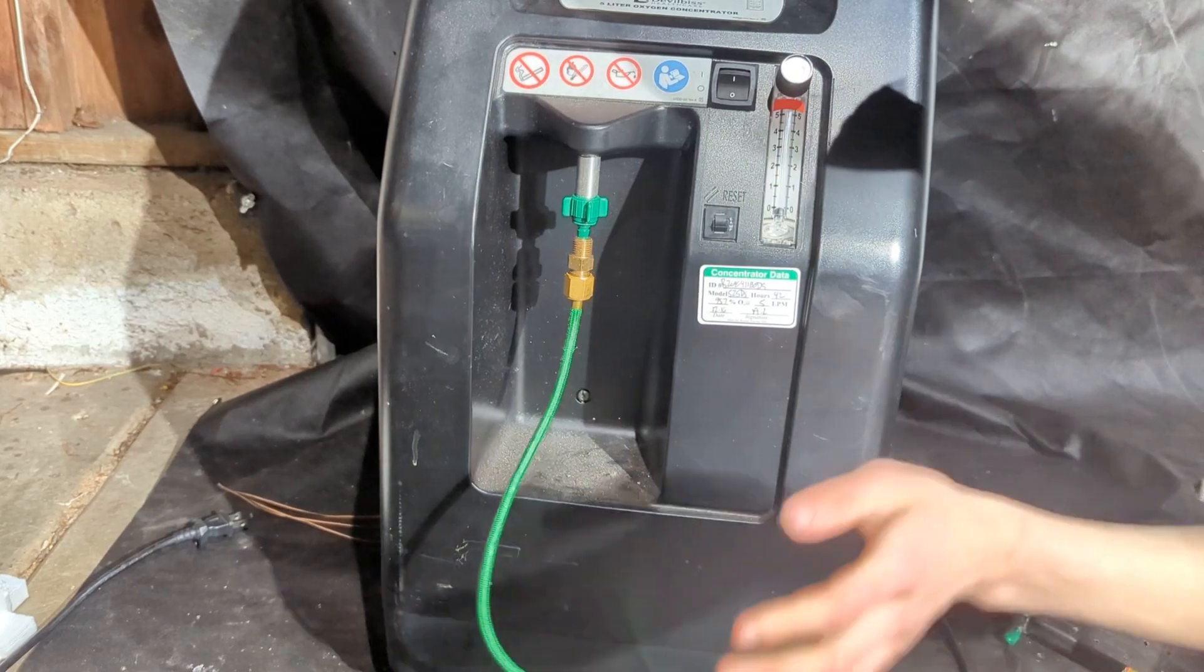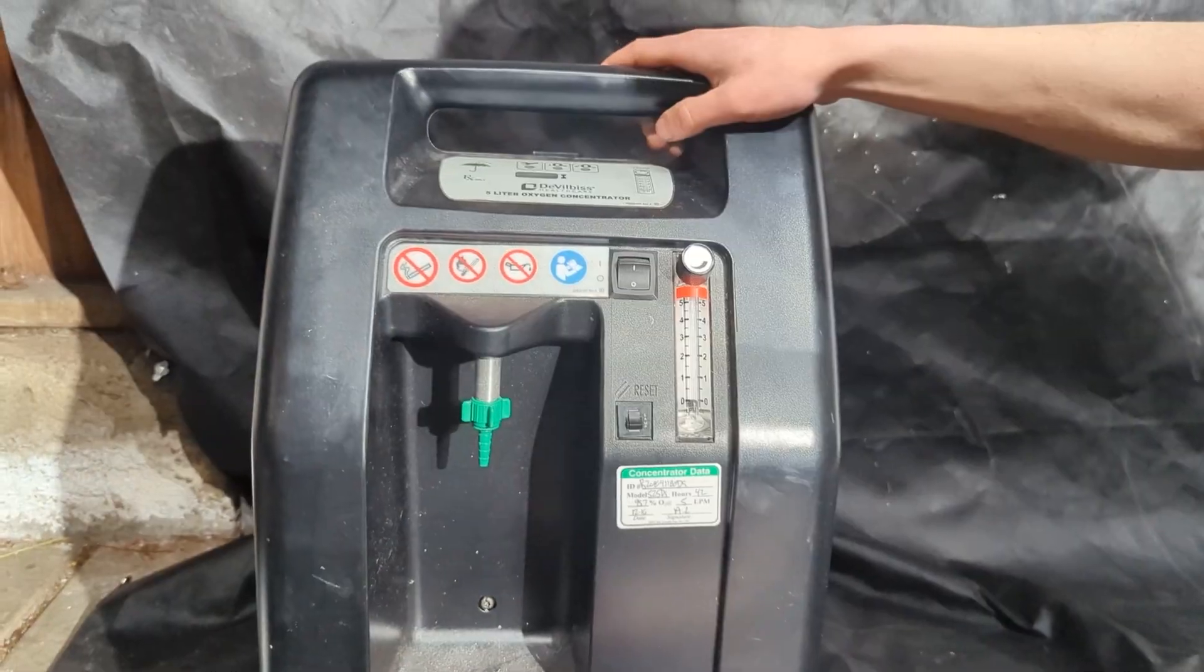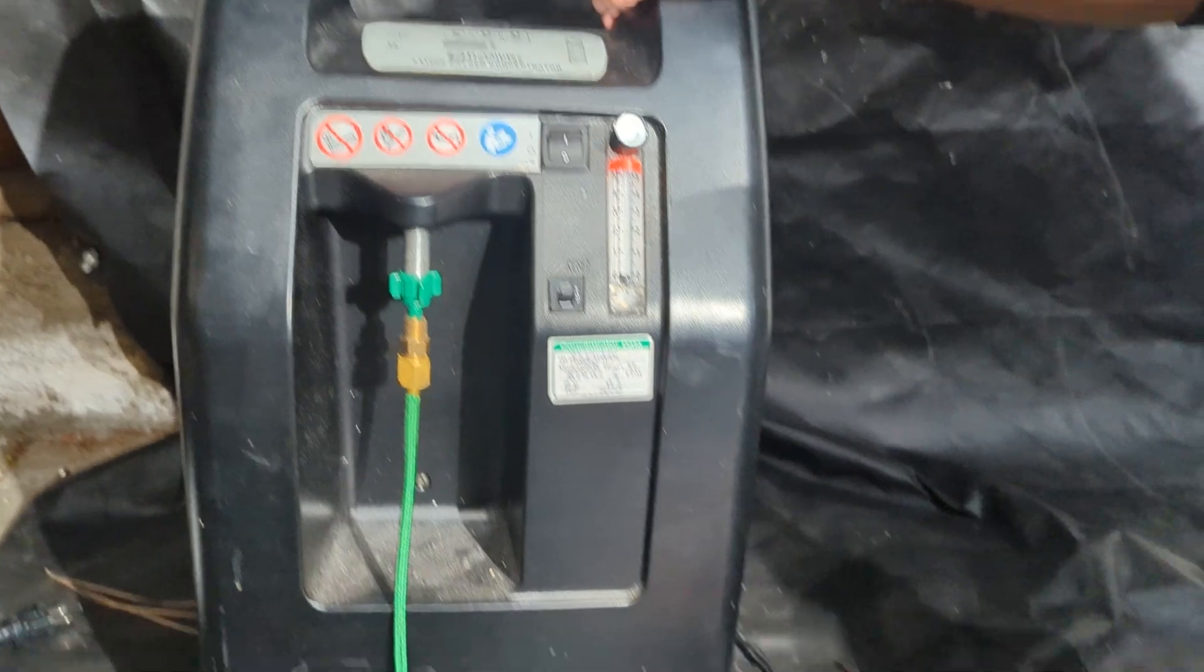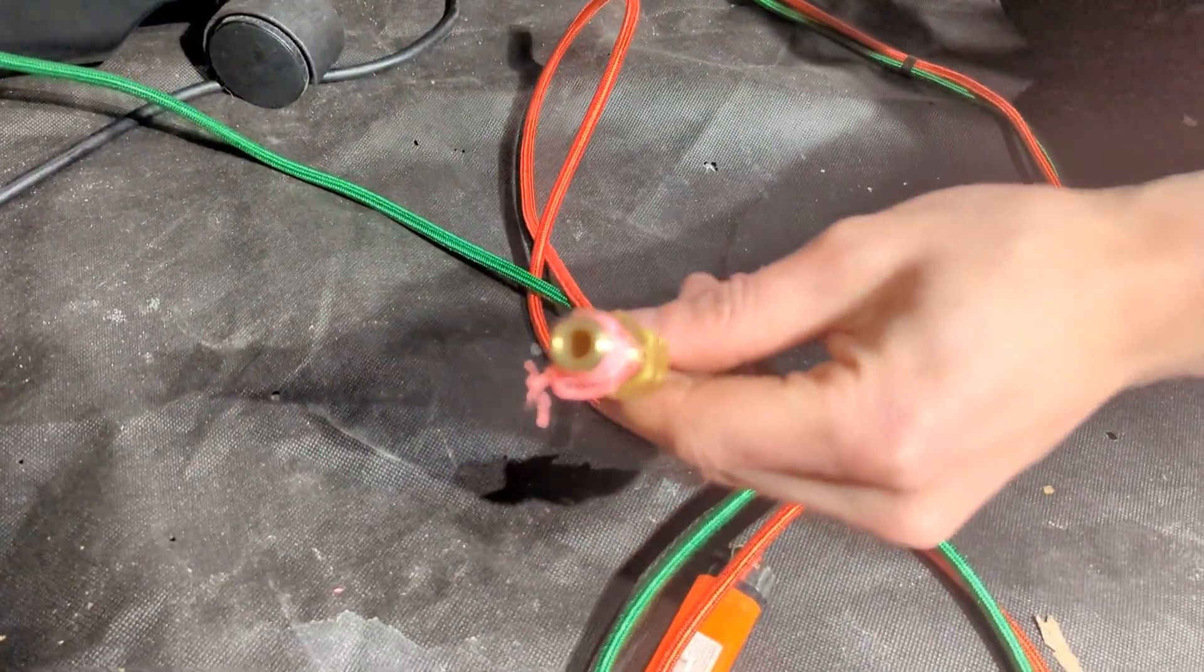All right, we connected the oxygen line up to the propane tank—this is not the propane. We're going to connect the oxygen line up to the oxygen concentrator, and now we'll take the propane line and connect it to the propane tank.